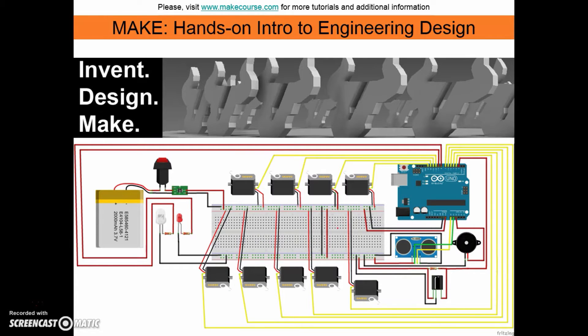Here we have a fritzing diagram for the control system of the rover. The power for the control system comes from an 11.1 volt lithium polymer battery and is stepped down to 5.08 volts by a voltage regulator. This was necessary as the drive servos would draw much more current than the Arduino board could provide. The system receives commands through the IR receiver and processes them through the Arduino.